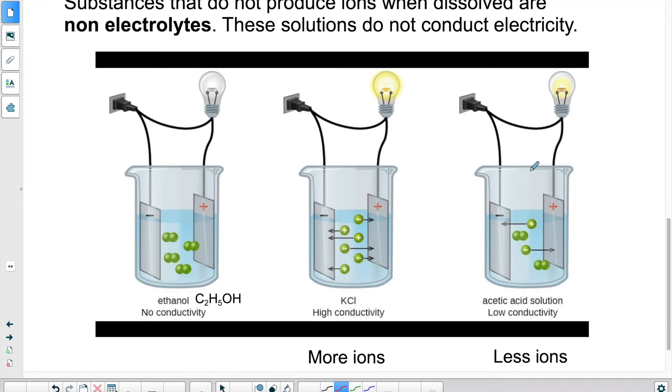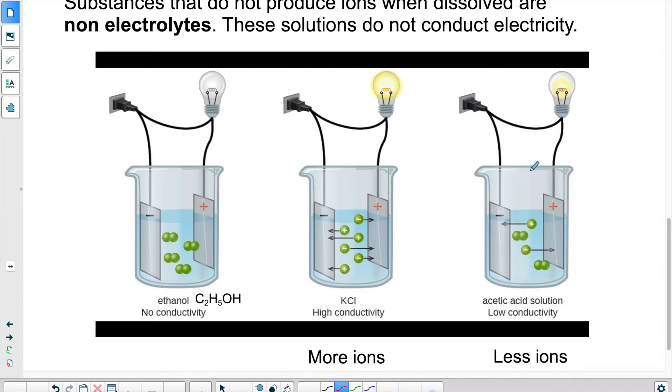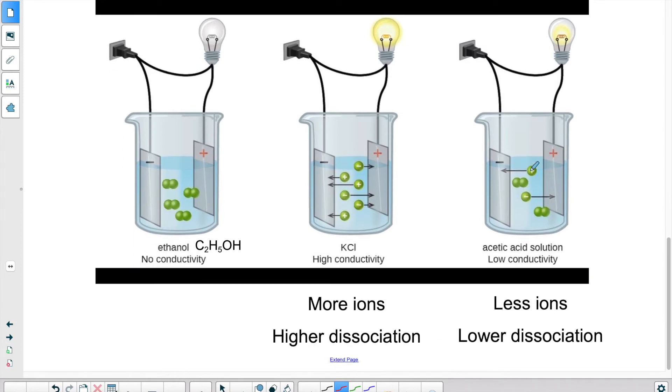So the more ions are created, so the more dissociation there is, the more electricity can flow. Higher dissociation creates more ions, which means more flow of electricity. Less ions comes from a lower dissociation and there's less electricity that can flow.